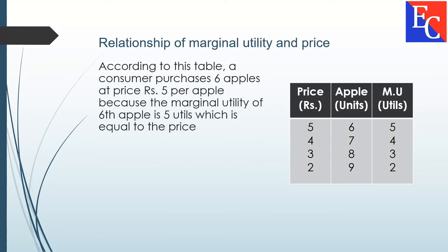According to this table, a consumer purchases 6 apples at the price of 5 rupees per apple, because the marginal utility of 6 apples is 5 utils, which is equal to the price.